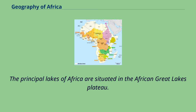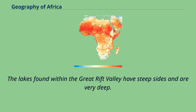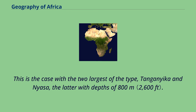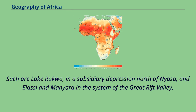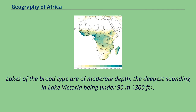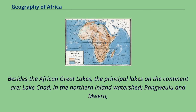The principal lakes of Africa are situated in the African Great Lakes Plateau. The lakes found within the Great Rift Valley have steep sides and are very deep. This is the case with the two largest of the type, Tanganyika and Nyasa, the latter with depths of 800 meters. Others, however, are shallow and hardly reach the steep sides of the valleys in the dry season — such as Lake Rukwa, in a subsidiary depression north of Nyasa, and Eyasi and Manyara in the system of the Great Rift Valley. Lakes of the broad type are of moderate depth, the deepest sounding in Lake Victoria being under 90 meters.